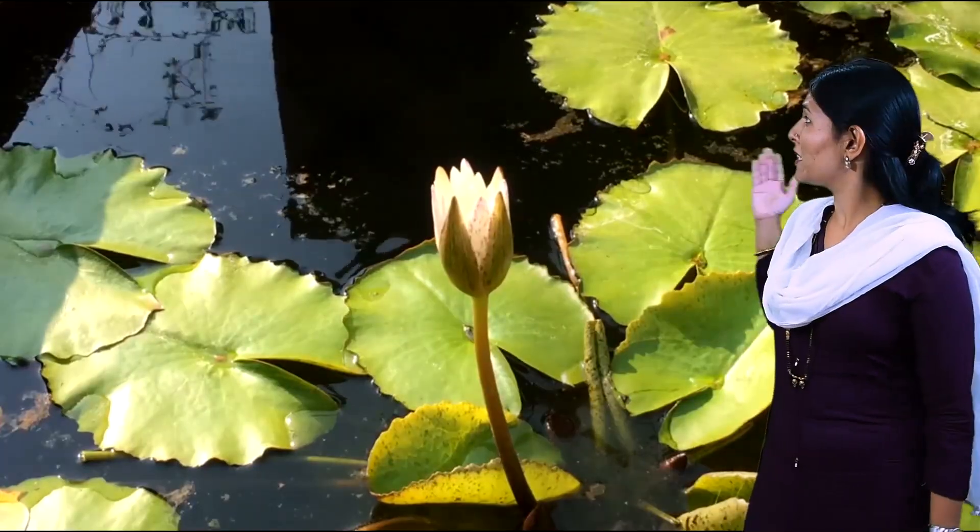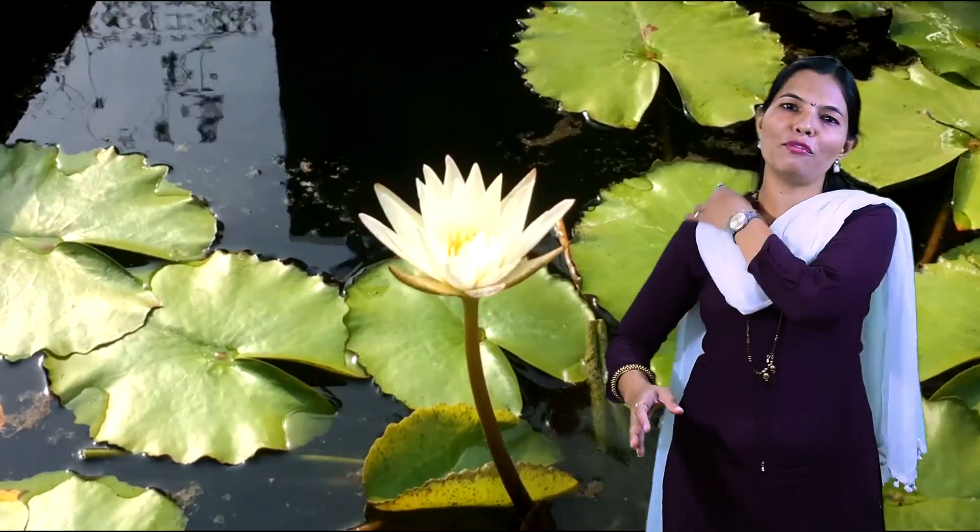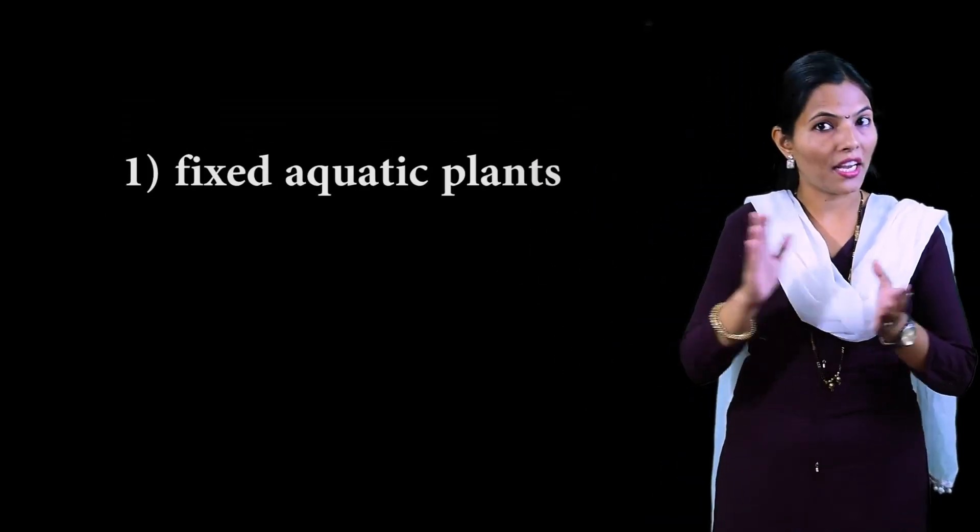What are fixed-rooted aquatic plants? You can see on the screen — these are lotus and lily flowers. These are fixed-rooted aquatic plants. Why? Because their roots get firmly and deeply into the soil at the bottom of the water body. That is why they are called fixed-rooted aquatic plants.